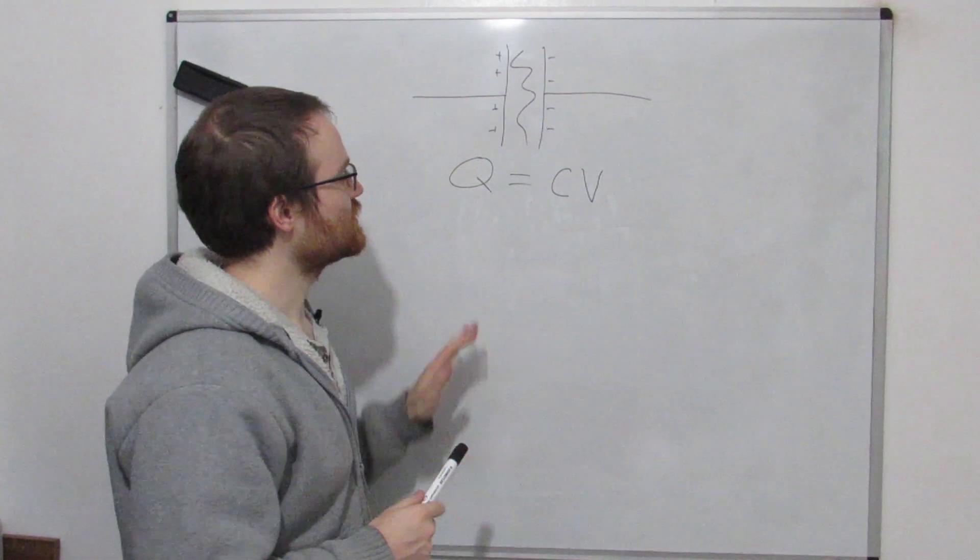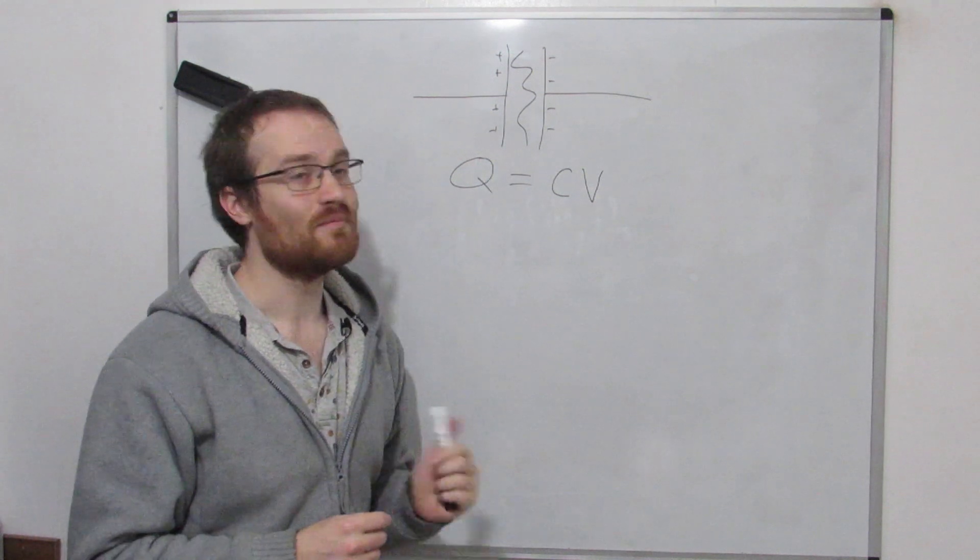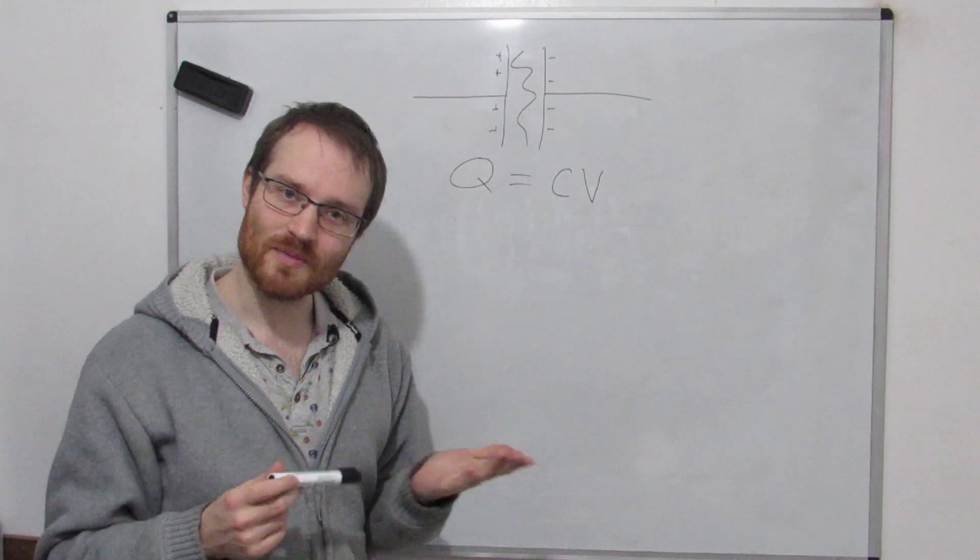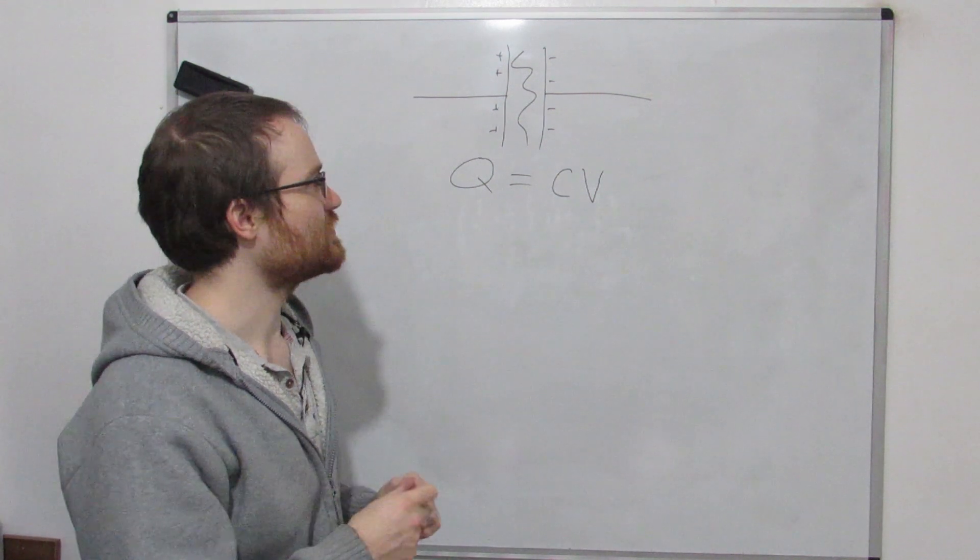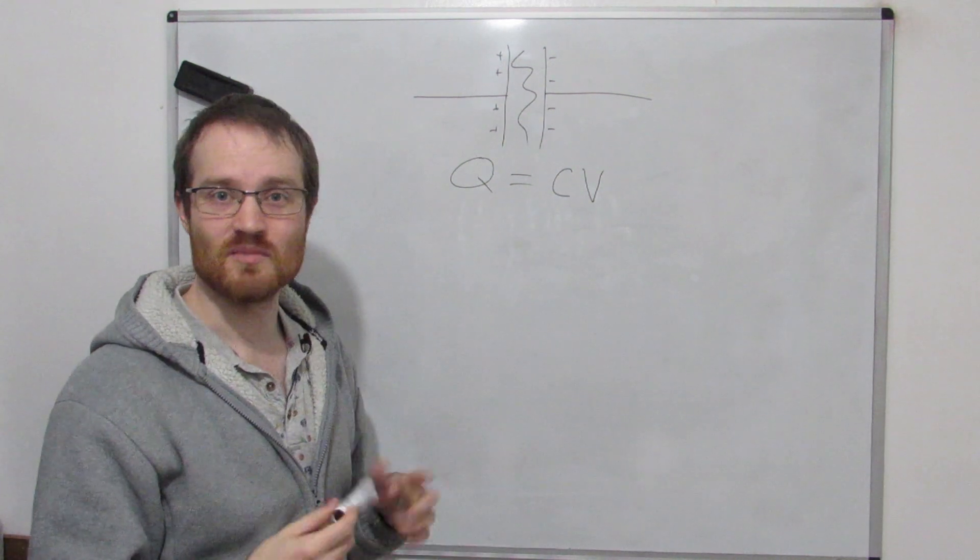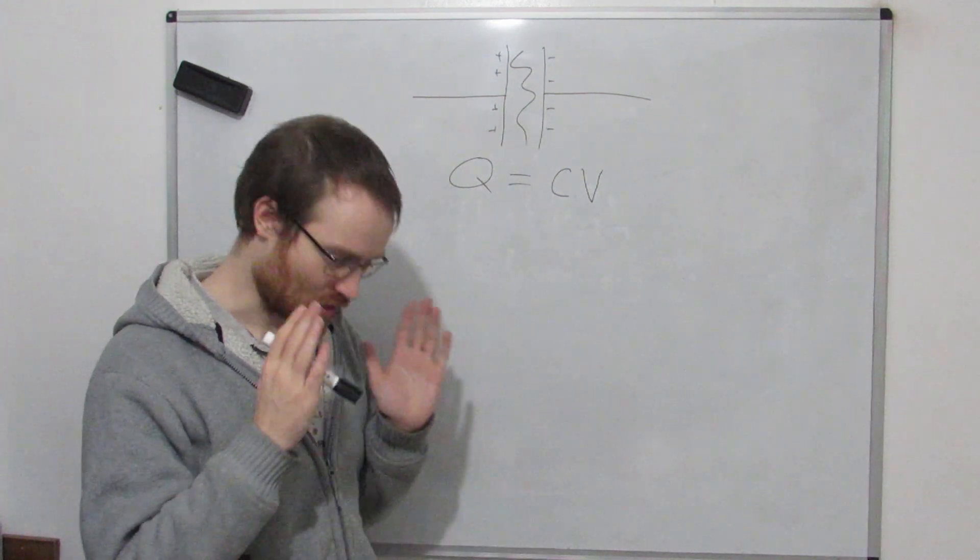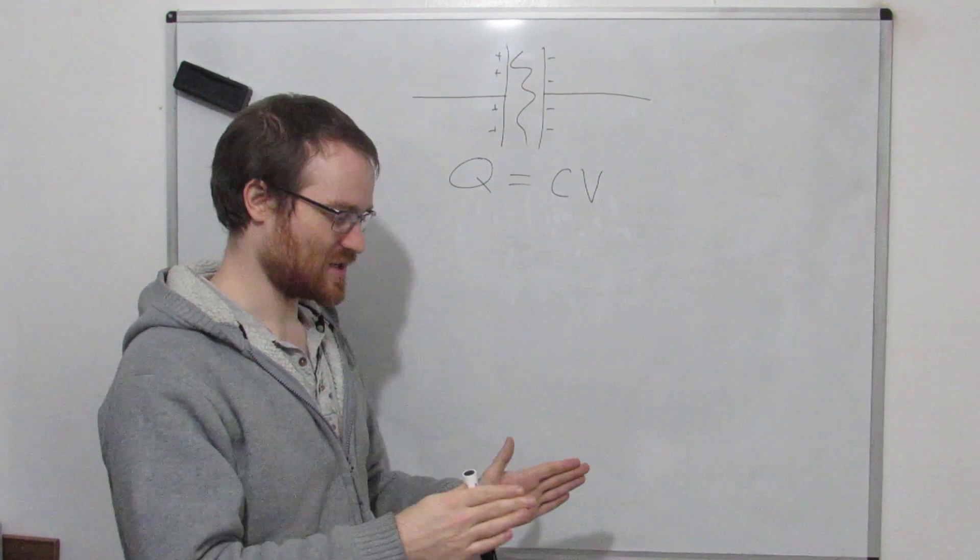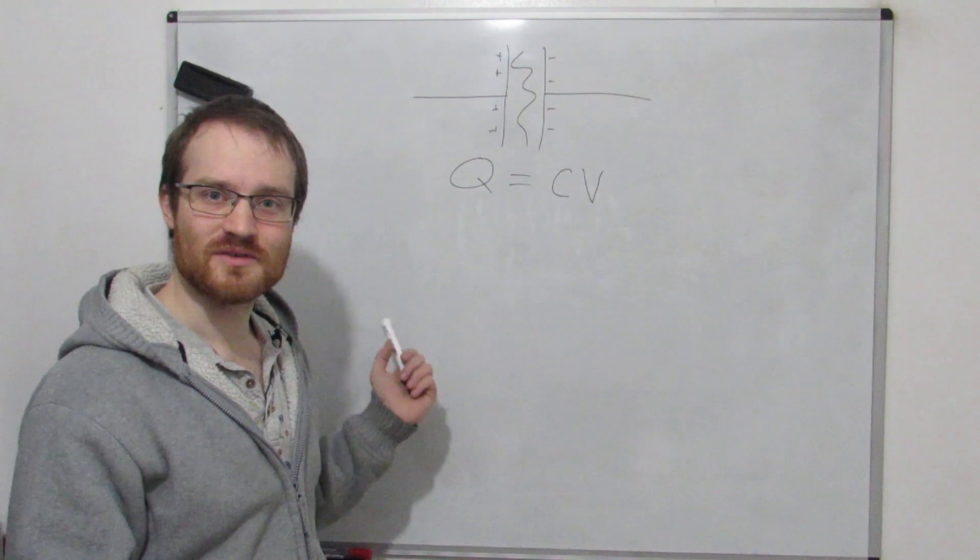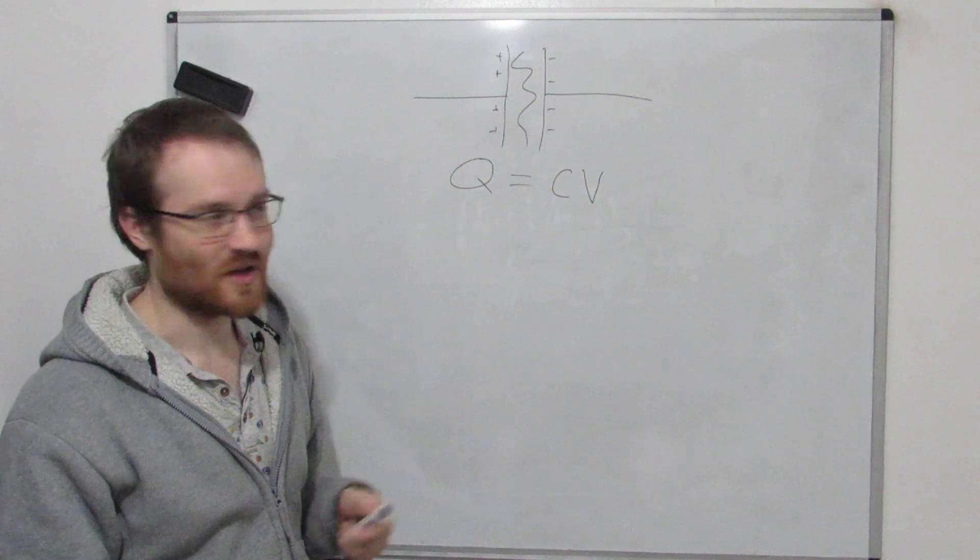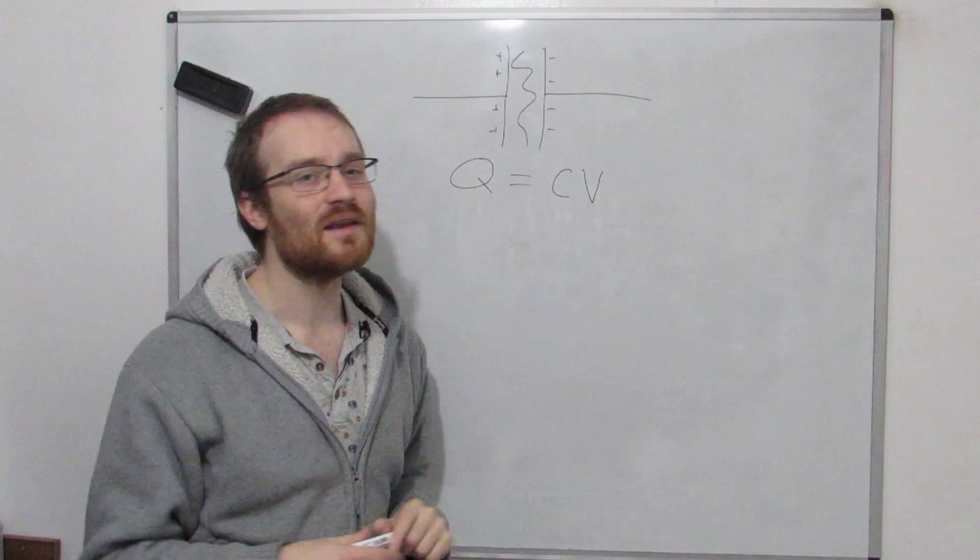Why is this important? Because the storing of charge gives capacitors memory. Why capacitors are so useful is that they can remember things that have happened in the past, which most circuit elements can't do. Resistors, you can only measure what is going on across a resistor at that moment. It can't tell you what the charge was a second ago, two seconds ago. Whereas, because of this ability to store charge, capacitors can do that.